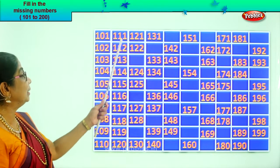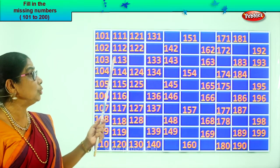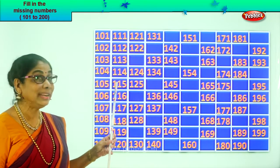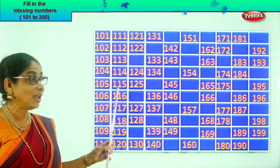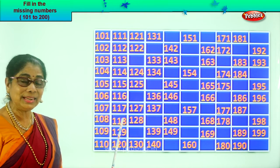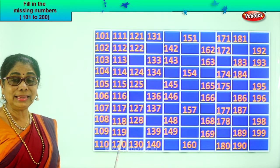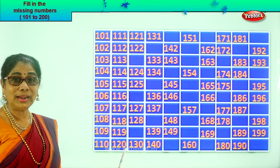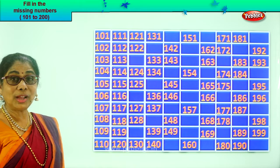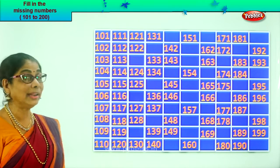Good. Now let's look at this: one hundred and eleven, one hundred and twelve, one hundred and thirteen, one hundred and fourteen, one hundred and fifteen, one hundred and sixteen, one hundred and seventeen, one hundred and eighteen, one hundred and nineteen, one hundred and twenty. So we learn to count and write 101 to 120.